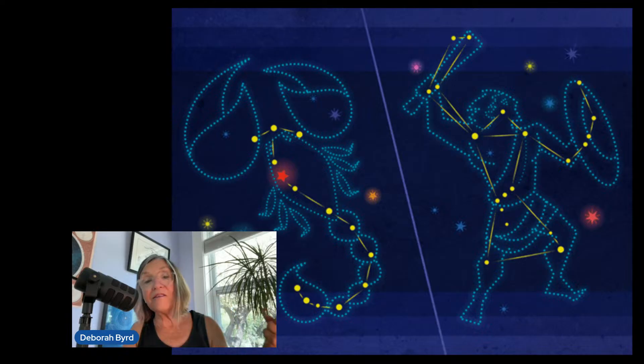And so today, the scorpion and the hunter never appear in the sky at the same time. It's only when the scorpion has set for the night that Orion will rise. So we see Orion before dawn each year, beginning around early August.